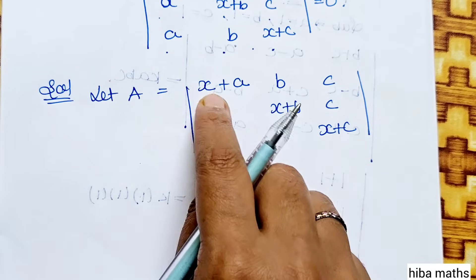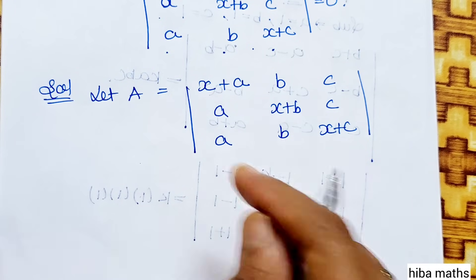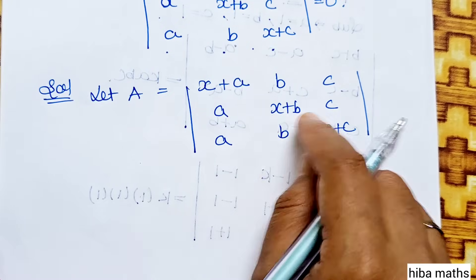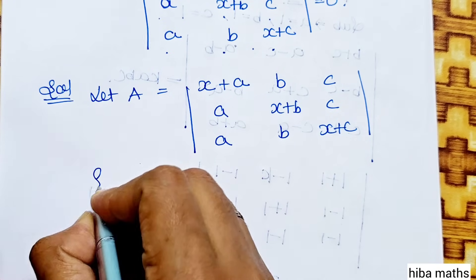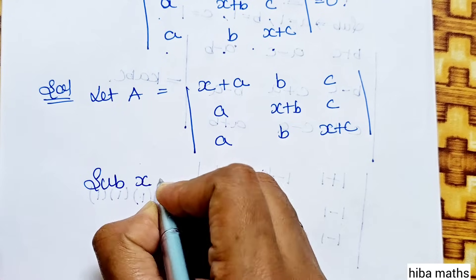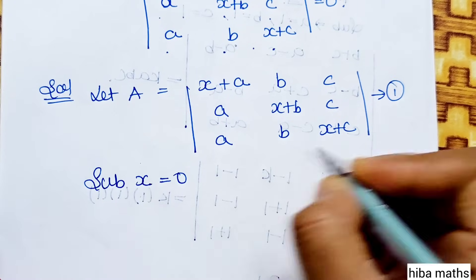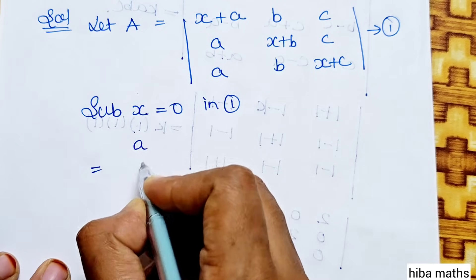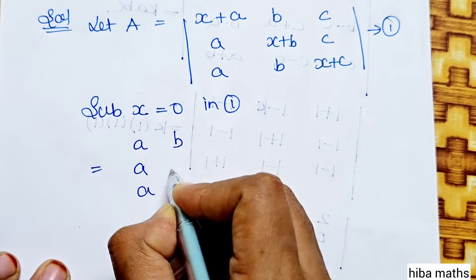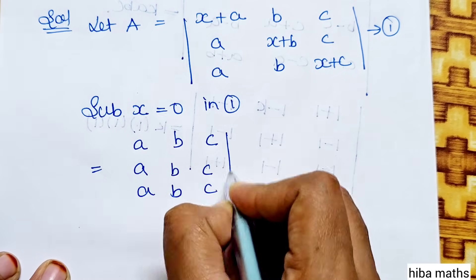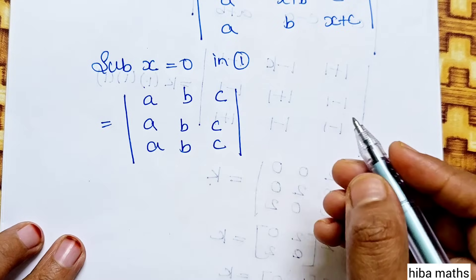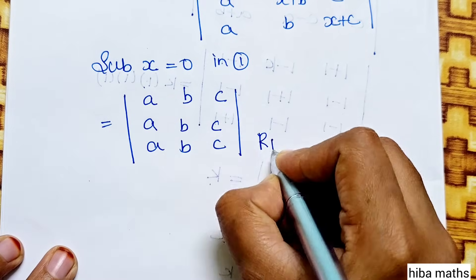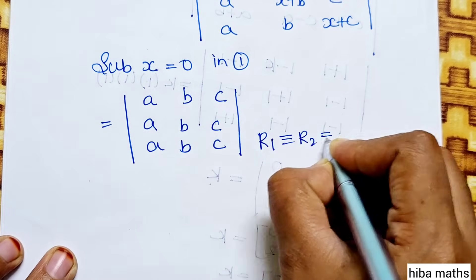First, substitute x equal to 0. When x equals 0, the rows become: row 1 is full A, row 2 is complete B, row 3 is complete C. Now R1, R2, R3 are equal — R1 equals R2 equals R3. So the determinant is 0.